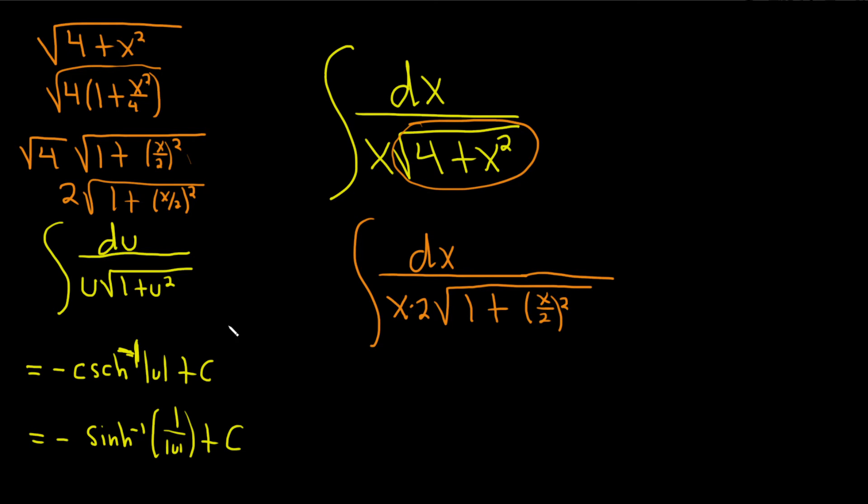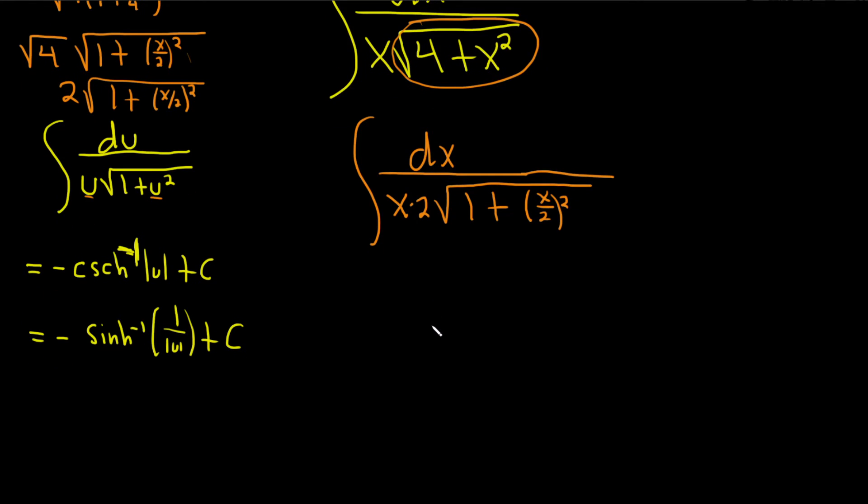We're not quite there yet. And the reason is, you see, in this formula, here you have u, and here you have u. So this x needs to be an x over 2. And it's not. So we need to make sure it is. So let's do it in steps. Step 1 is let's move this 2 out of the way. So 1 half integral dx over x square root 1 plus x over 2 squared.